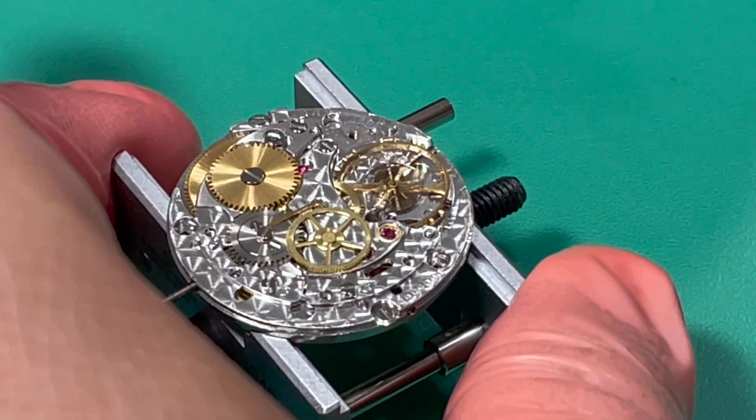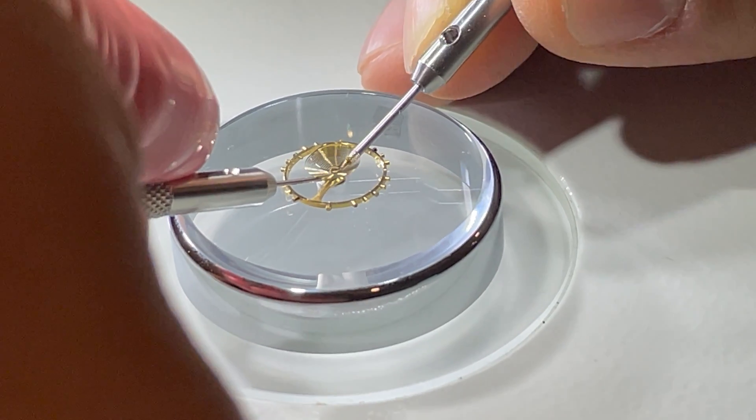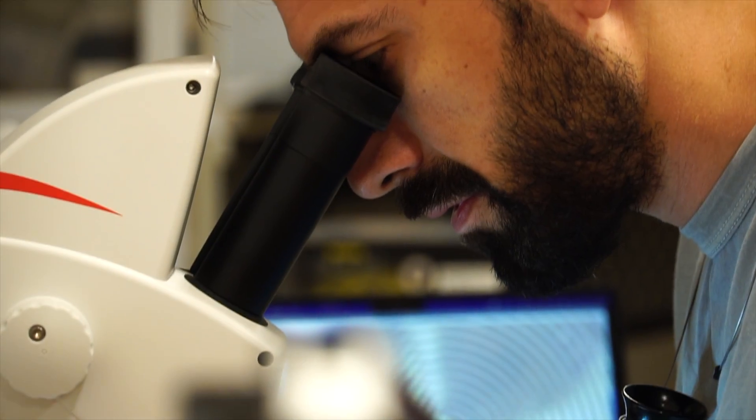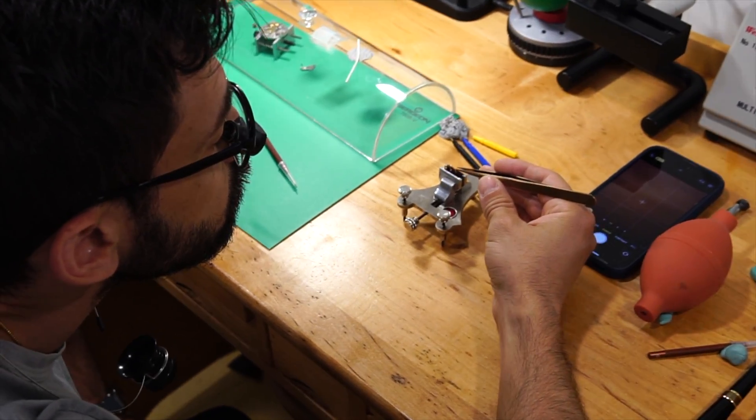So what we're going to do today, we're going to take the balance off the watch, we're going to take the hairspring off, we're going to observe the hairspring, make sure it's centered, maybe a static poisoning of the balance, and see if we can get this delta down from 49 seconds to within acceptable tolerances.